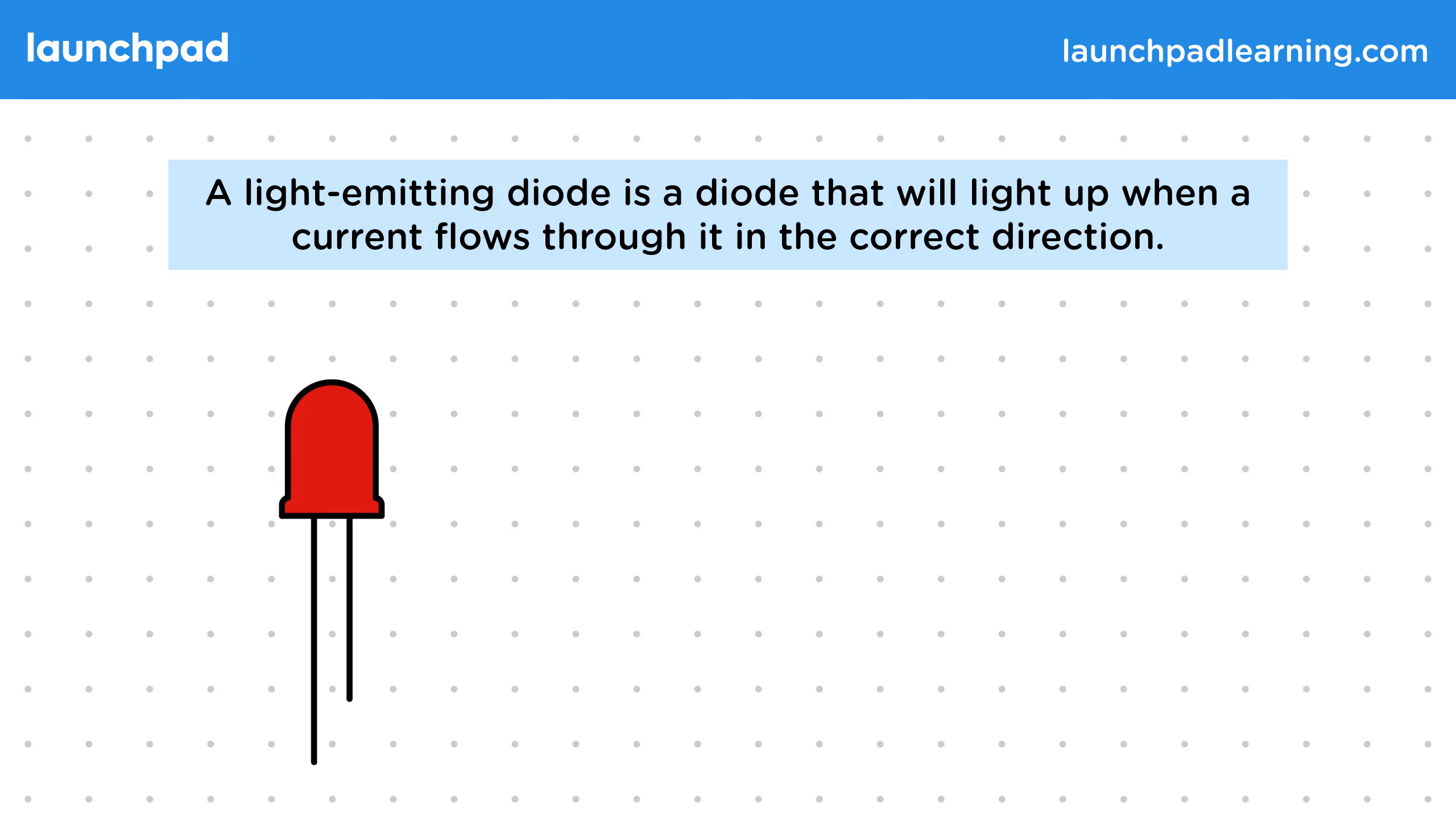Like normal diodes, they still stop currents from flowing through them in the wrong direction. There's no stripe to indicate its positive bias, but instead we can use the legs to determine this. The current should flow up the longer leg and down the shorter leg. Usually there's also a flat edge by the shorter leg.